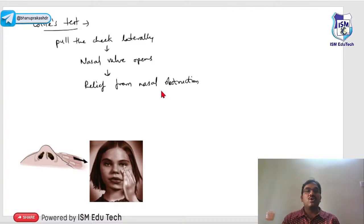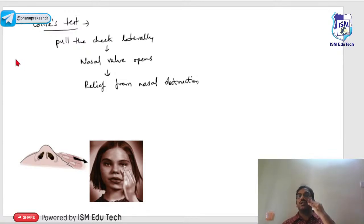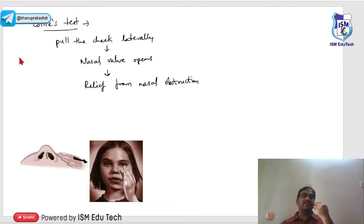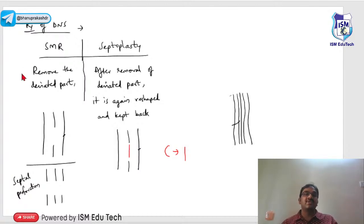The Cottle's test checks whether the nasal septum is causing nasal obstruction. On the side of complaint, pull the cheek laterally — this widens the nasal valve area and gives the patient instantaneous relief from obstruction. When you release it, the obstruction returns. This indicates septal deviation, and septoplasty should be planned. Cottle's test is a functional test for deviated nasal septum.